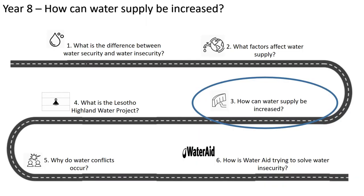Going back to our roadmap, which we've been using for the first two lessons — this is lesson three. We're going to look at how water supply can be increased: different ways we can actually increase the amount of water in an area. If an area has a water deficit, how can we increase water security and provide enough water for the whole population living there?